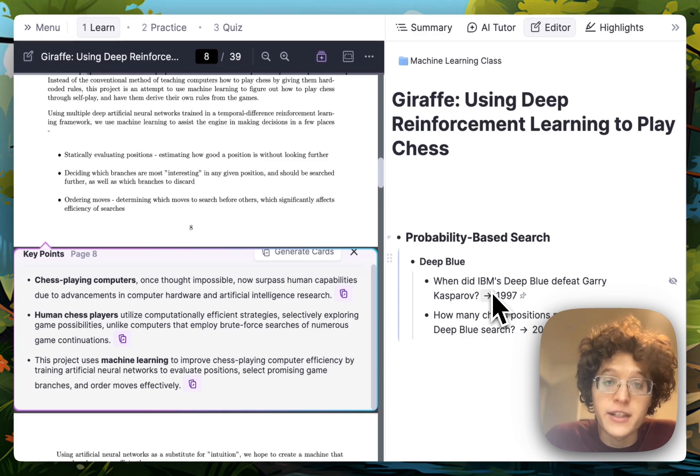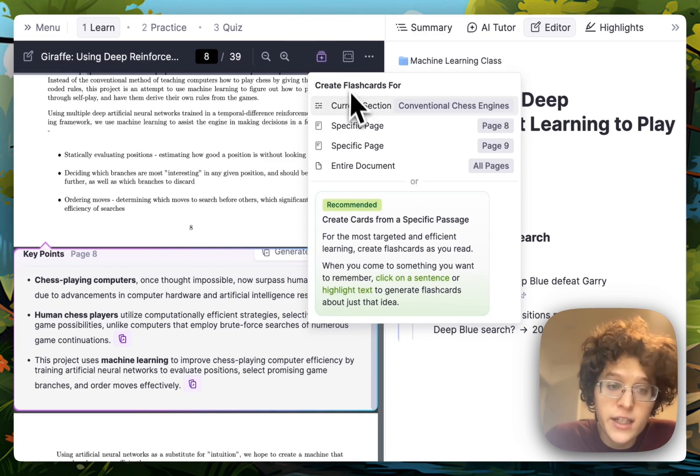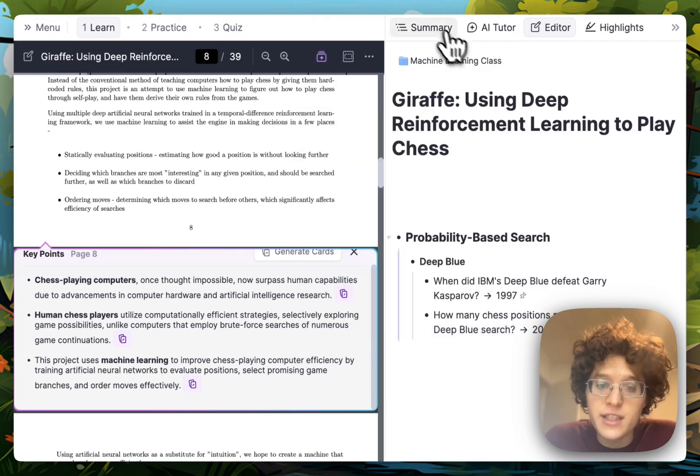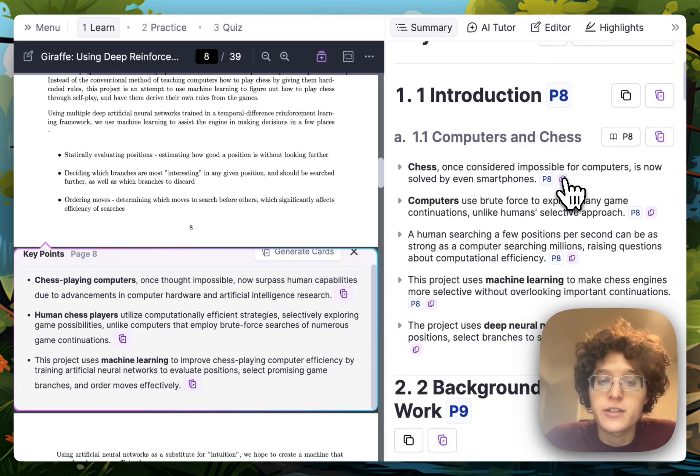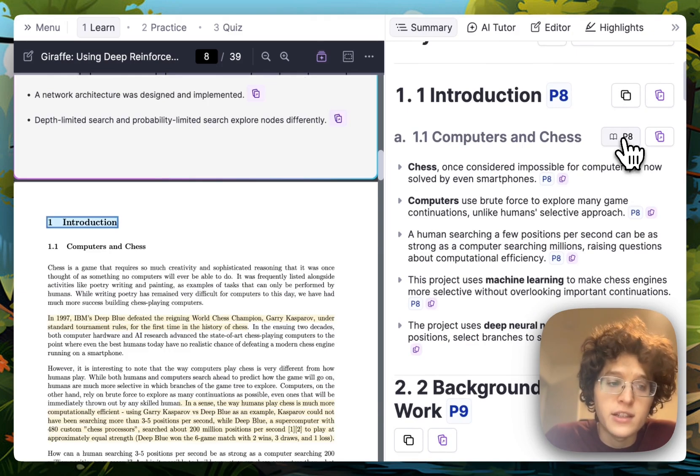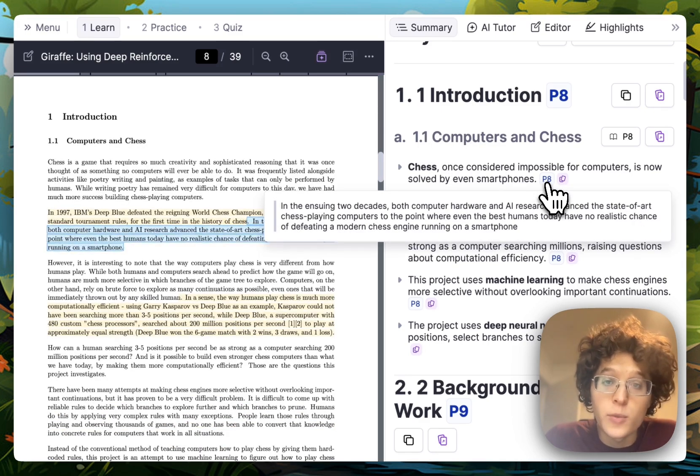If you want to bulk create cards, you can do so from this purple create AI cards button at the top, where you can do it for the current section, specific page, or the entire PDF document. As you read through the summary, you can also create flashcards directly there, or you can directly jump to the corresponding section for any section of your summary, or any individual point.